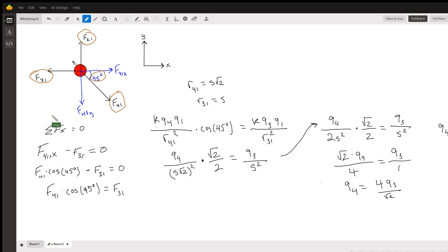Now we'll go on to plugging everything in. We have the sum of forces in the x equal to zero, so we'll take the x component of four-on-one minus the total force of three-on-one equal to zero.